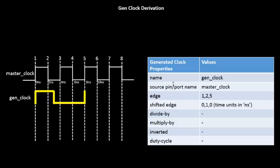Any kind of waveform present at the GenClock pin or port can be defined with the existing switches and properties of the GenClock command. That is always possible. Using the shifted edge and edge combination, or using divide-by, multiply-by, invert, and duty cycle — all these options are sufficient to represent any kind of waveform that a circuit might generate.